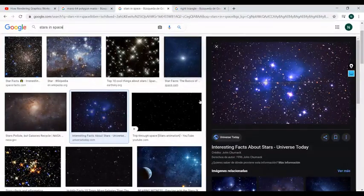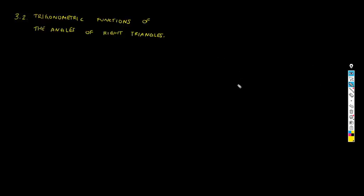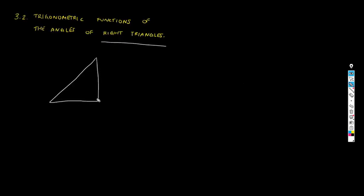As you can see, trigonometry is very widely used in engineering, science, and technology everywhere. That's a little taste of its uses. Now let's get to the matter: today we're going to define the trigonometric functions of the angles of right triangles. First of all, what is a right triangle? It's a triangle which has a right angle — the technical name is right-angled triangle, but most people just call it a right triangle.